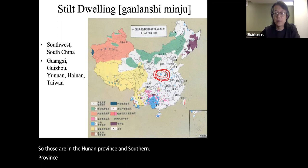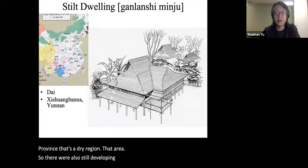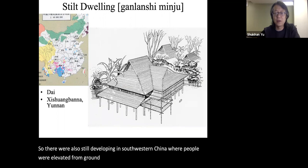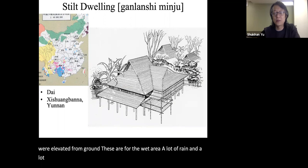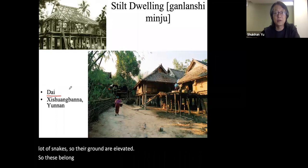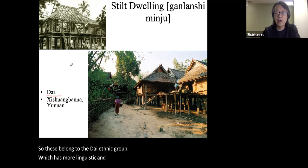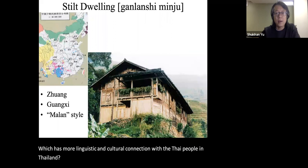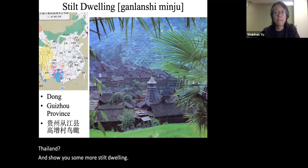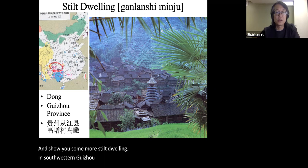There were also stilt dwellings in southwestern China where people are elevated from the ground. These are for wet areas with a lot of rain and snakes, so the ground floor is elevated. These belong to the Thai ethnic group, which has more linguistic and cultural connection with the Thai people in Thailand. More stilt dwellings can be found in southwestern Guizhou province, just next to Yunnan.